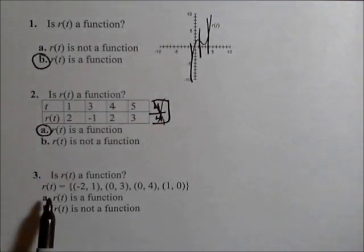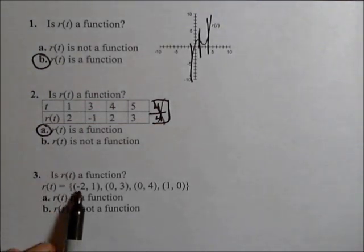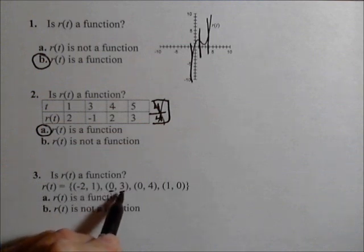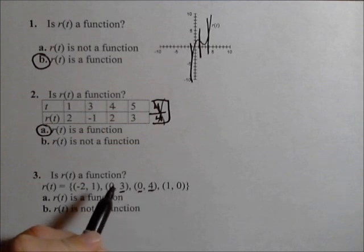Is r(t) a function? Again, we want to make sure each input has a unique output. So if we look, notice here zero has an output of three, and zero also has an output of four.